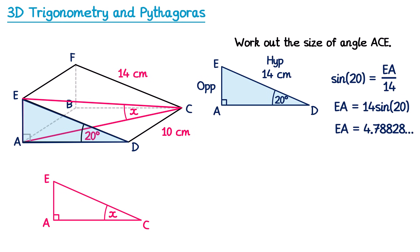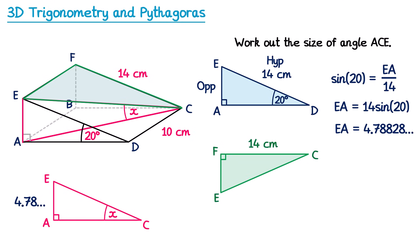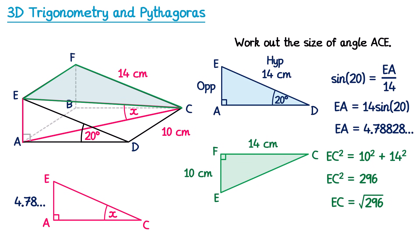Now we've found EA, we add this to the red triangle. Next we need to find the length EC using triangle EFC on the top face of the prism. FC is 14 cm and EF is 10 cm (same as DC). Using Pythagoras: EC² = 10² + 14² = 296, so EC = √296. Since we'll need this length in a moment, we leave it in surd form as √296 rather than converting to a decimal.